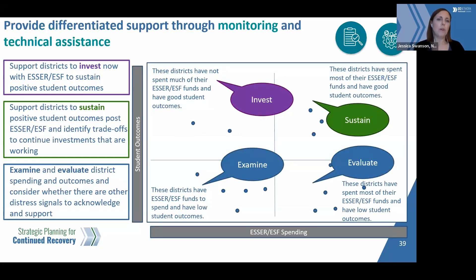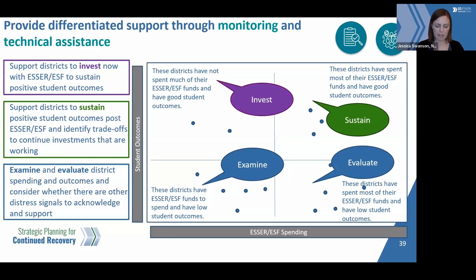A key strategy we would also suggest for supporting LEAs or schools — if you're a unitary system — is providing differentiated supports through monitoring and technical assistance. An SEA might sort districts by ESSER or ESF spending, or sort schools or regions into a quadrant system. Looking at the top right quadrant, that represents LEAs that have spent most of their funds and have good student outcomes. Plotting LEAs or schools in a quadrant like this can help you identify the right next steps in terms of support.